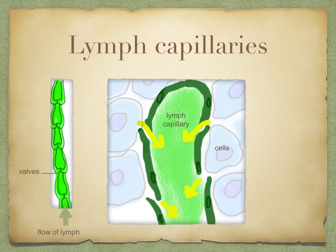Lymph capillaries have tiny valves that allow the tissue fluid to enter but will not let the lymph pass out again. They join up to form lymph vessels, and these have structures similar to veins — they are thin-walled and contain semi-lunar valves to make sure that lymph flows in one direction, as you can see on the left there.